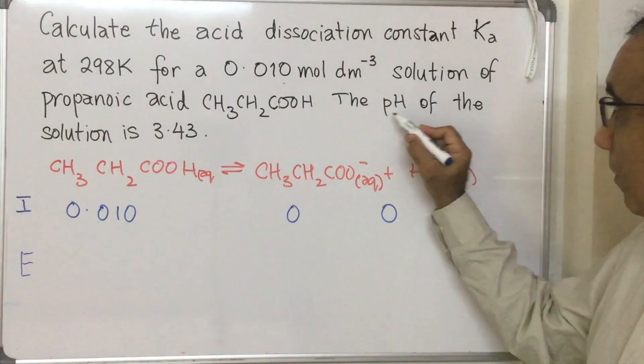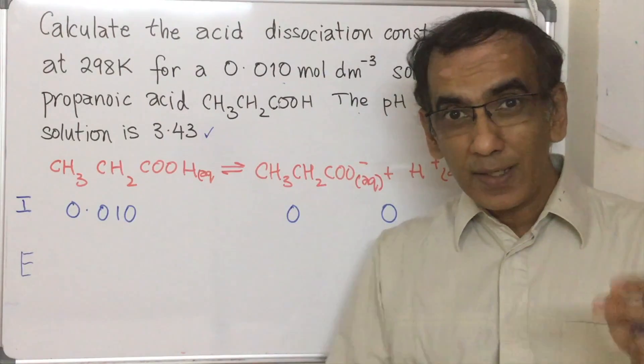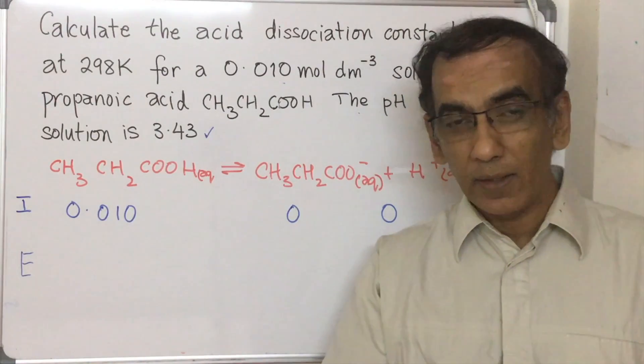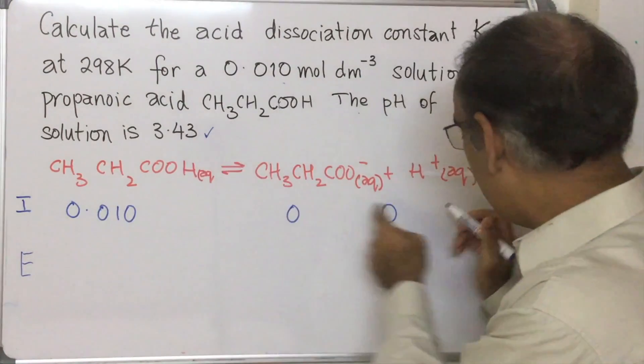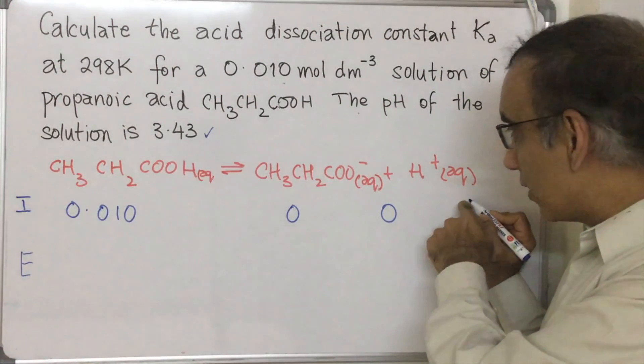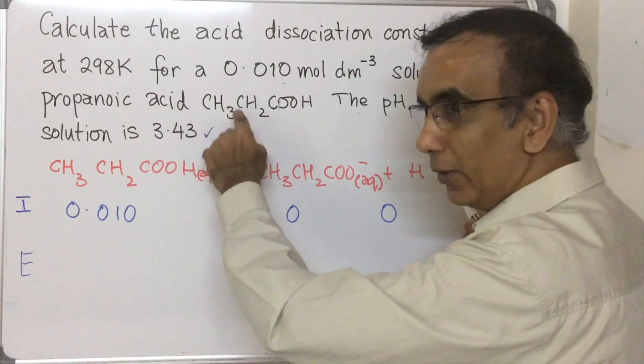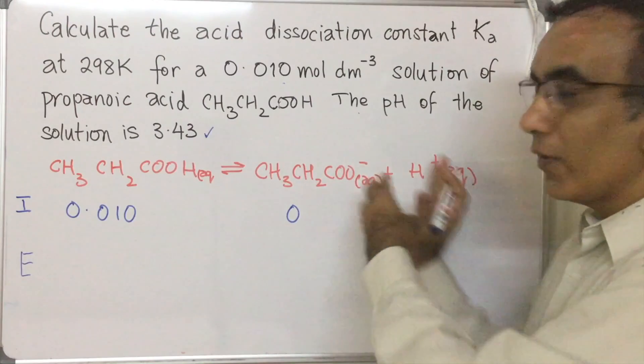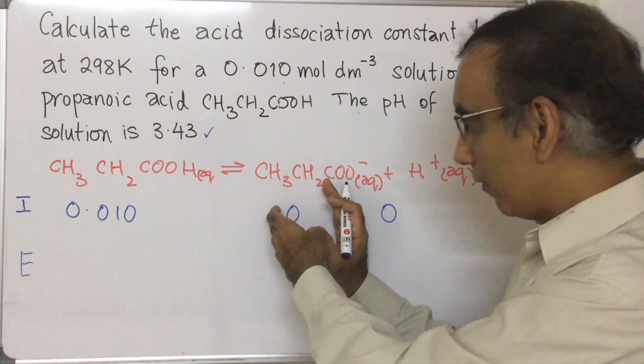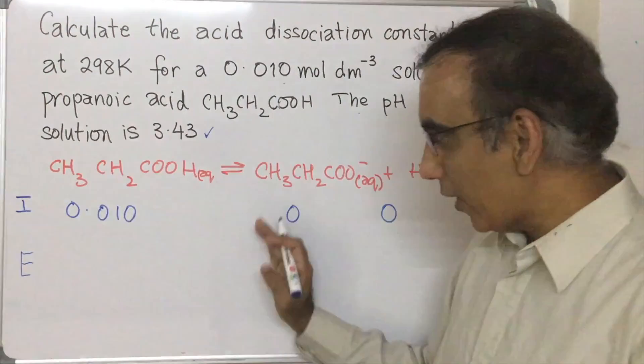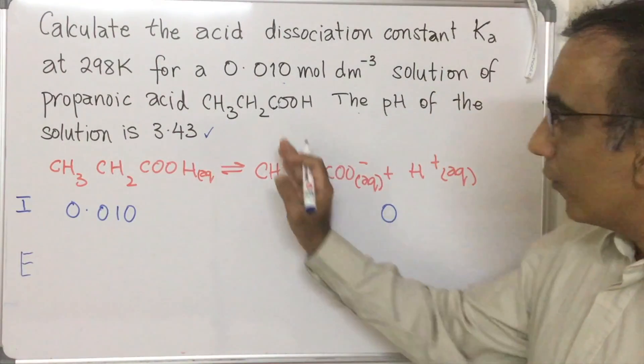And here we've been given the pH of the solution 3.43. We should remember that pH is the negative log to the base 10 of the hydrogen ion concentration in solution. So this could give us a hint as to this. And because the equation says that this concentration is equal to this one, then if we take this pH value here and we reverse the pH calculation, then we could figure out the hydrogen ion concentration, the concentration of this ion, and then we could by subtraction figure out the concentration of this species.